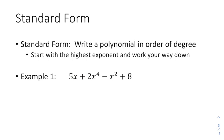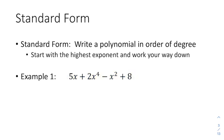A couple of vocab words we're going to be dealing with. First, we're going to talk about something called standard form. Standard form is when you write your polynomial from the highest exponent down to the lowest exponent. Each one of these pieces of the polynomial are called terms, and terms are separated by addition signs. If you have a subtraction sign, it's really a plus and negative.